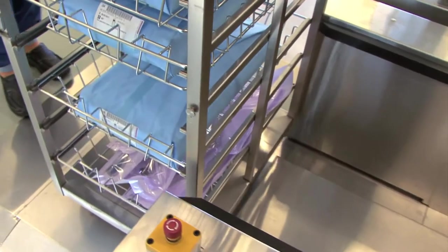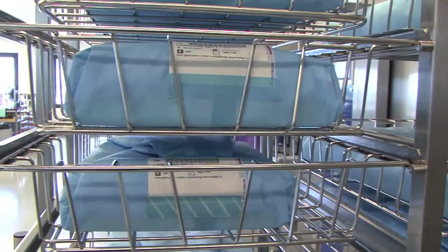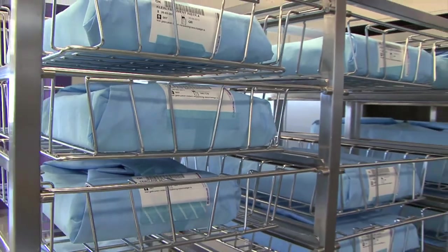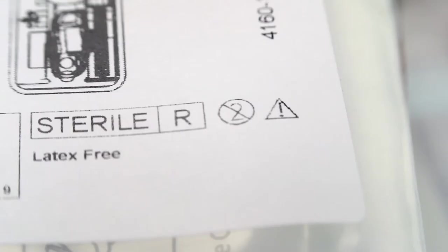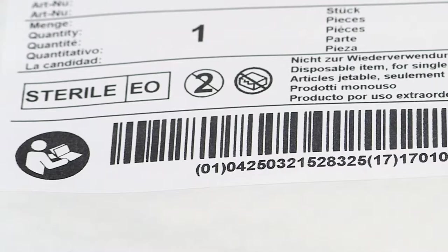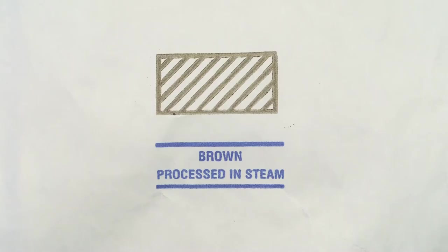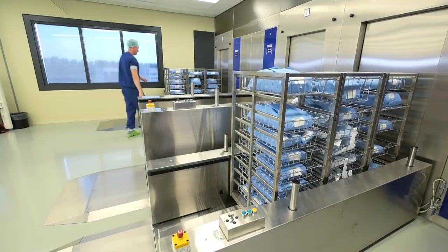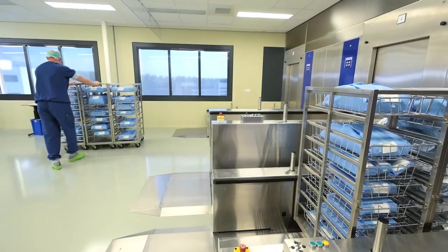All medical devices are sterilized in their sterile barrier system before they are used. There are a variety of sterilization methods used. These include irradiation indicated on the label as R, ethylene oxide gas indicated as EO, and steam. The chosen sterilization method must be compatible with both the device and the barrier system.